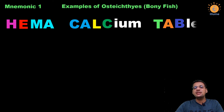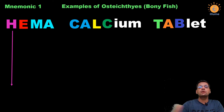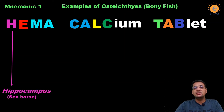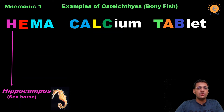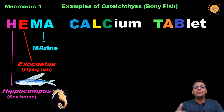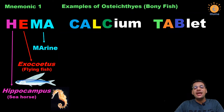These tablets remind us of strong bones, so the mnemonic belongs to the bony fishes. 'Hema': H stands for Hippocampus, that is the sea horse. E stands for Exocoetus, the flying fish. 'Ma' of Hema means these two examples — Hippocampus and Exocoetus — belong to marine bony fish. In NCERT, examples of bony fish are classified into three groups: marine fishes, freshwater fishes, and fishes used in aquariums.